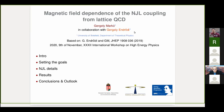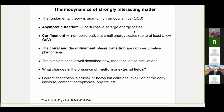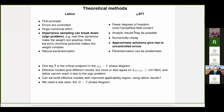As a very broad motivation — we've heard this several times today, so I will basically skip it — the main idea is that confinement and chiral symmetry breaking are the main features of strongly interacting matter, and we need non-perturbative tools, which can either be lattice QCD or some effective models which try to capture some low-lying degrees of freedom.